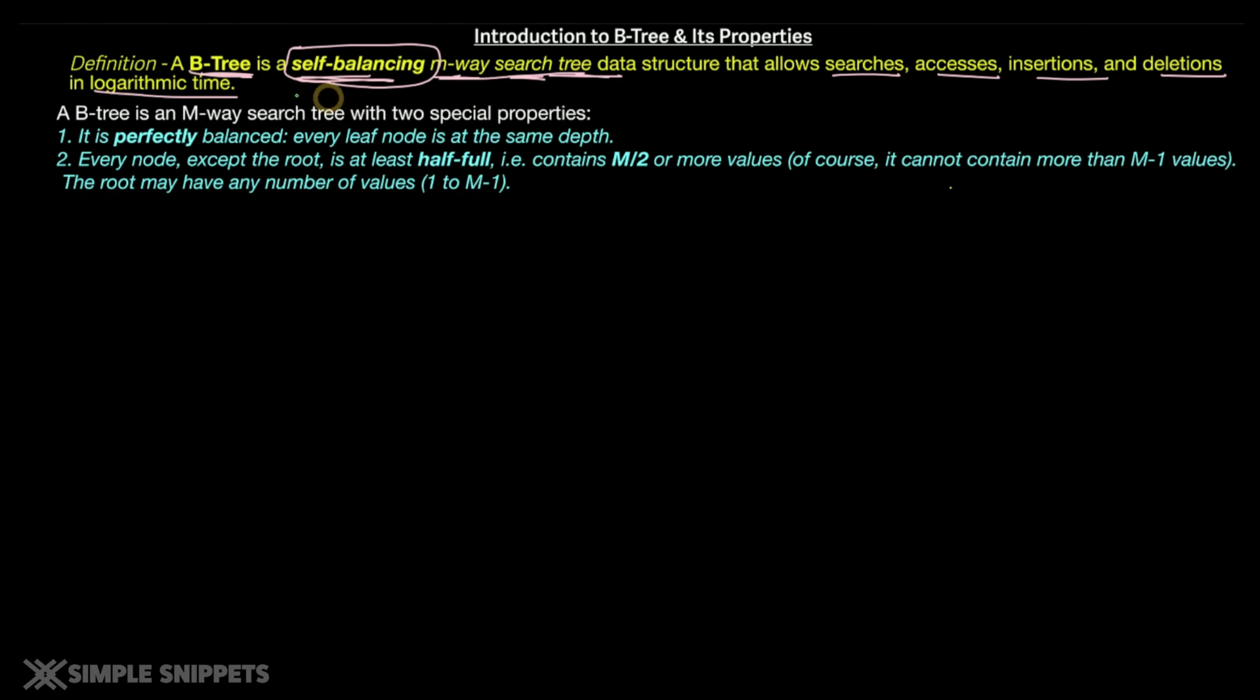So a B-tree is again an M-way search tree with two extra special properties. Number one is it is perfectly balanced. Keep this in mind. If you're making notes, you can take a note of this one. So basically every leaf node is at the same depth. The next point is every node except the root node is at least half full. That is it contains M by two or more values. So we know since B-tree is a M-way search tree and let's say if M equals to three, that would mean that one node can hold M minus one keys, right?